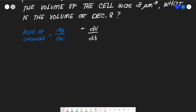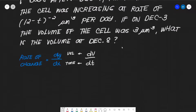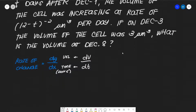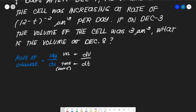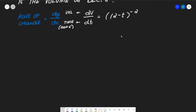Time is measured in days — t days after December 1. The rate of change in volume is increasing at the rate of (12 - t)^(-2), so dv/dt = (12 - t)^(-2).